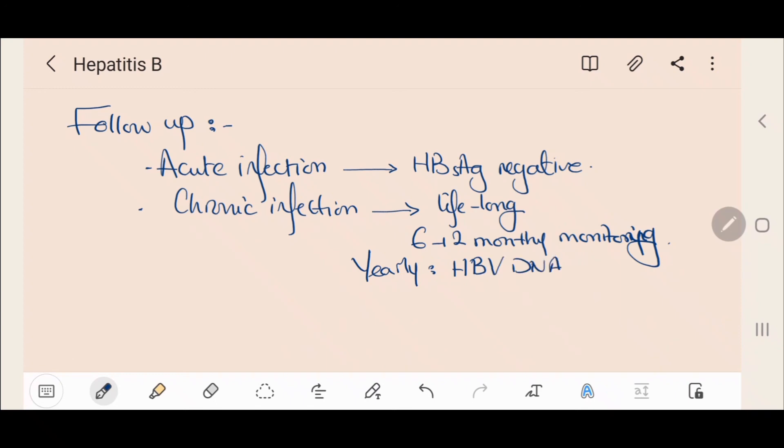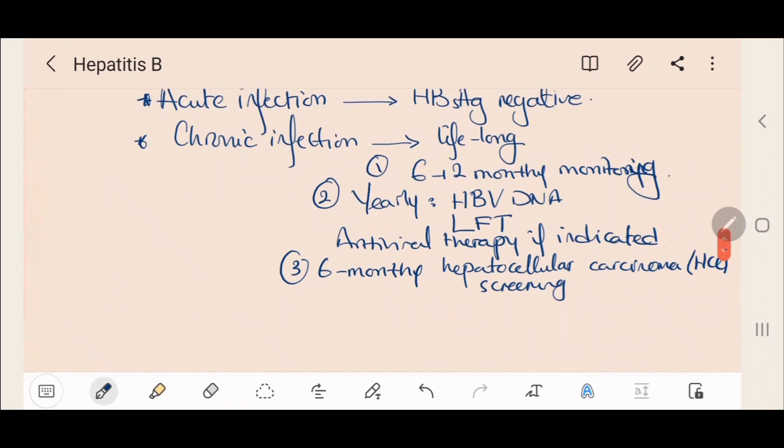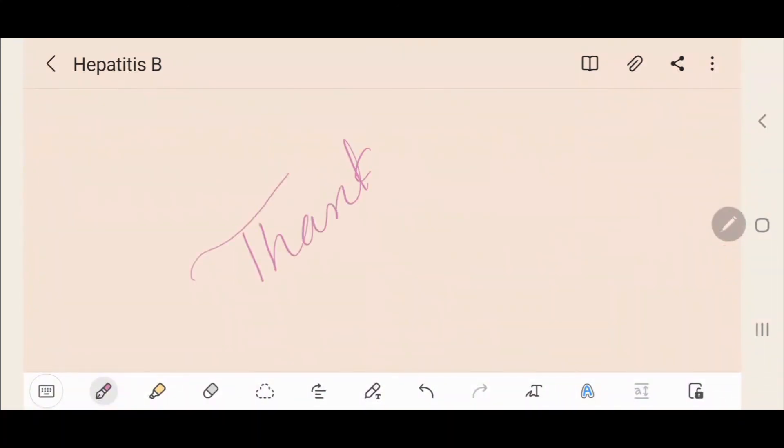Liver function testing and antiviral therapy if indicated. Certain populations with chronic hepatitis B require 6-monthly hepatocellular carcinoma screening, which involves abdominal ultrasound and alpha-fetoprotein. We should also check Hepatitis A status and vaccinate if susceptible. Patients with chronic hepatitis B should be assessed for other causes of hepatitis such as alcohol and fatty liver and should be counseled to reduce these factors if relevant, such as reducing alcohol intake.